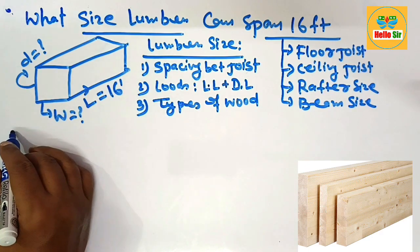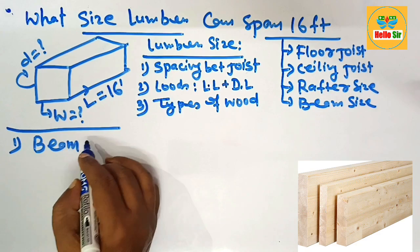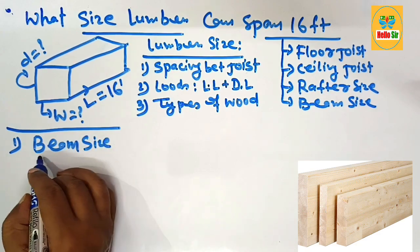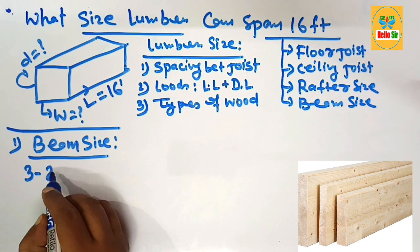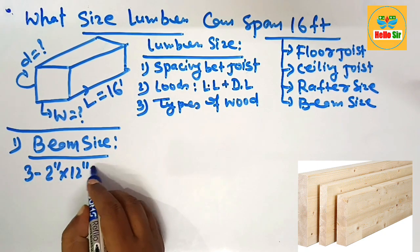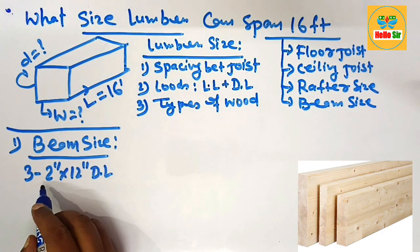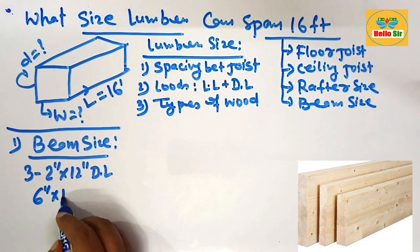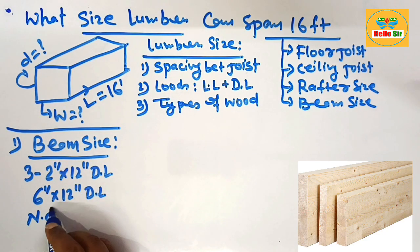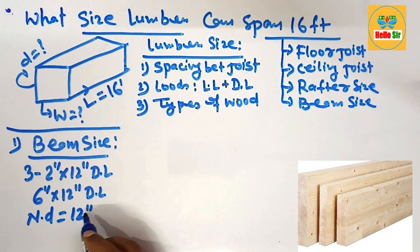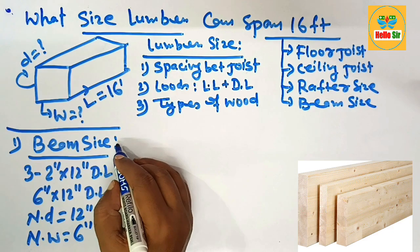For general purposes, the first thing to note is what beam size is required to span 16 feet. You can take three pieces of 2-inch by 12-inch dimensional lumber as the wood beam required to span 16 feet. This can also be expressed as 6-inch by 12-inch dimensional lumber, with a nominal depth of 12 inches and nominal width of 6 inches.